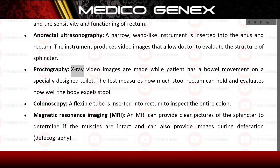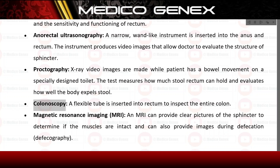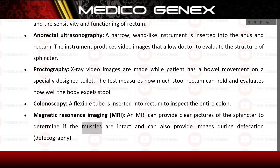Proctography: X-ray video images are made while the patient has a bowel movement on a specially designed toilet, measuring how much stool the rectum can hold and evaluating how well the body expels stool. Colonoscopy: a flexible tube is inserted into the rectum to inspect the entire colon. MRI can provide clear pictures of the sphincter to determine if the muscles are intact and can also provide images during defecation — defecography.